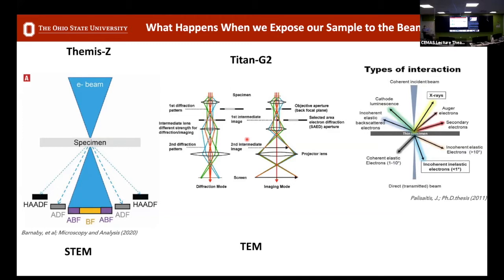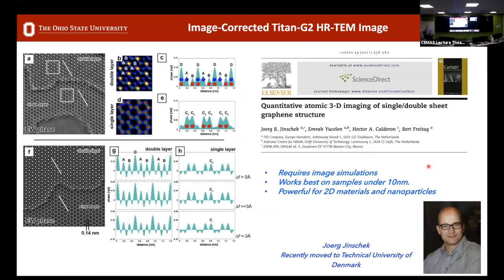When the beam interacts with the sample, there are signals that come out above the sample and signals that come out below. At CMASS with these two microscopes we have a variety of detectors and spectroscopy equipment to capture and analyze these signals. What we really want to talk about is how we're going to use these microscopes to collect scientifically valid data and pull out quantitative results.